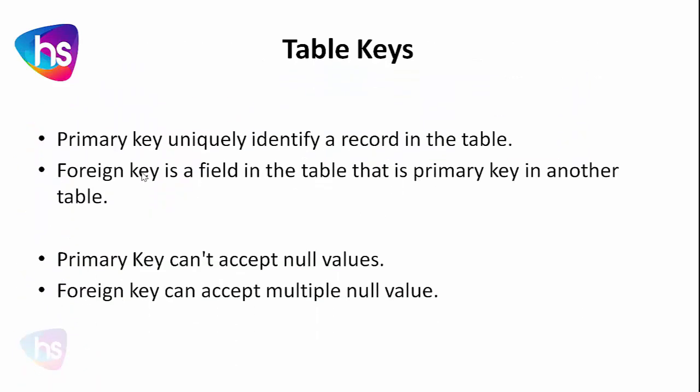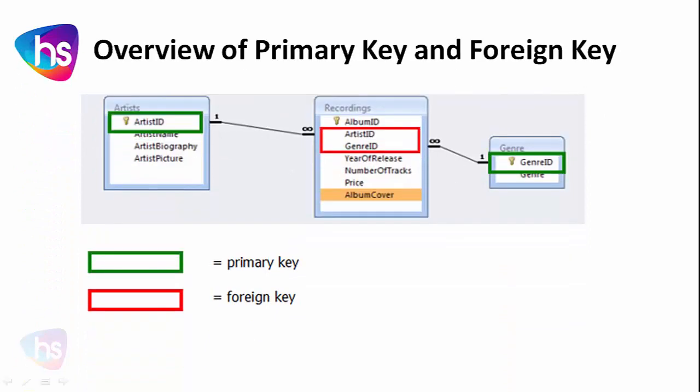Here you will observe on the left side, there is a table where green indicates the column is a primary key. On the rightmost table, there is a Genre table with GenreID as a single column making it the primary key.